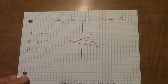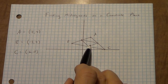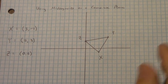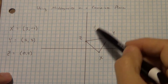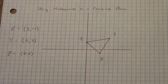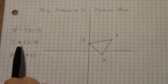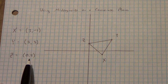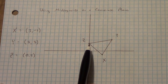Now we're going to move to what happens when we start with the small inner triangle and have to find the big triangle outside. I already have that set up and graphed. Our three midpoints are X equals (3, -1), Y equals (5, 3), and Z equals (0, 2). We're going to graph the larger triangle, which will be somewhere outside the small one.